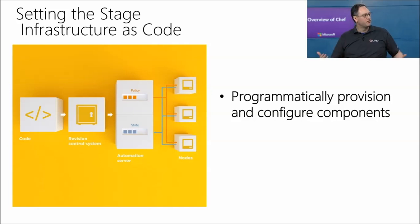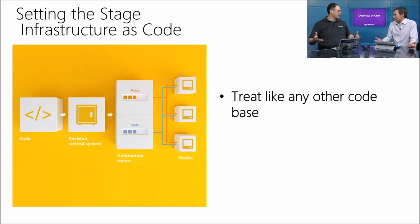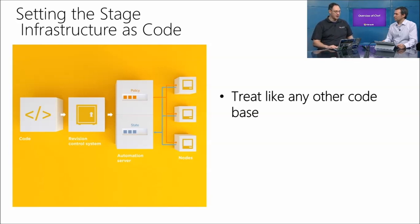Infrastructure as code helps provide those types of abstractions. We get to programmatically provision and configure components. Chef actually is a programming language. Before people get scared by that — batch scripting and command.exe, that's programming. VBScript, that's programming. We call it scripting in a lot of cases, but it's programming. So infrastructure as code — when I talk about being able to programmatically do things or treat our infrastructure as code — this isn't some scary concept that lives in the realm of developers. This is something that IT professionals can leverage and take great advantage of.